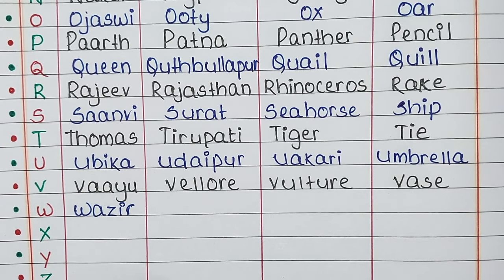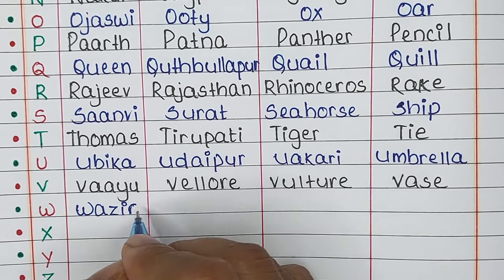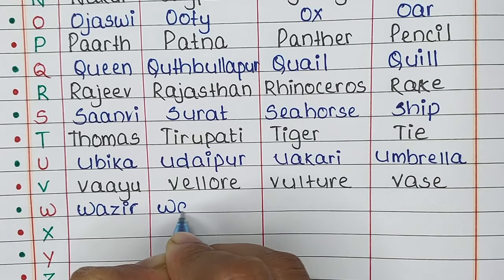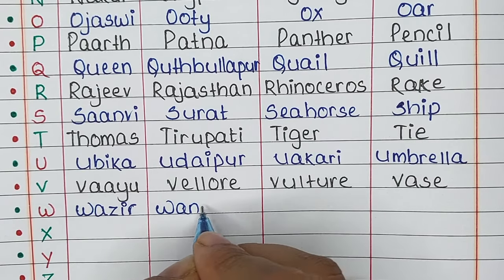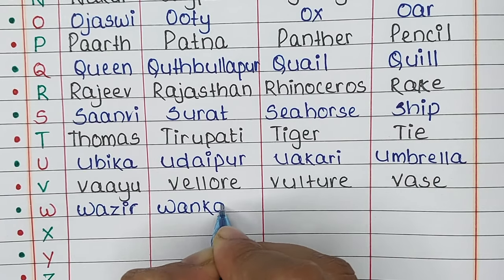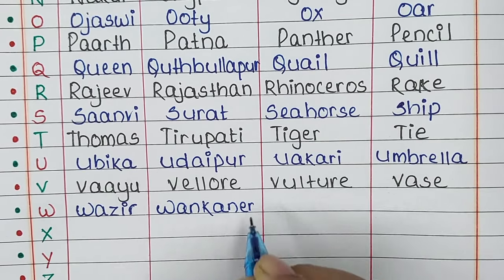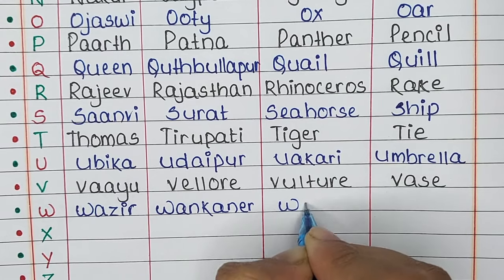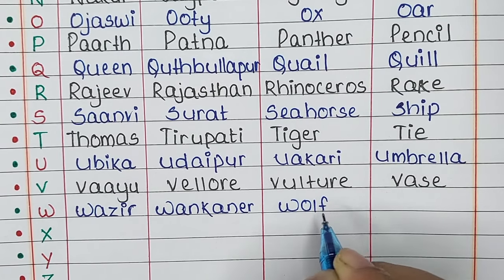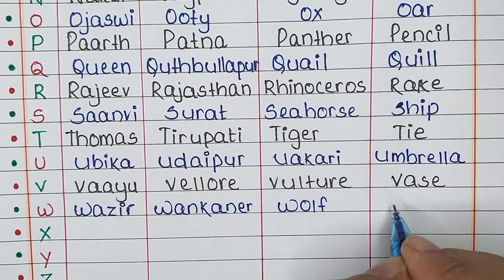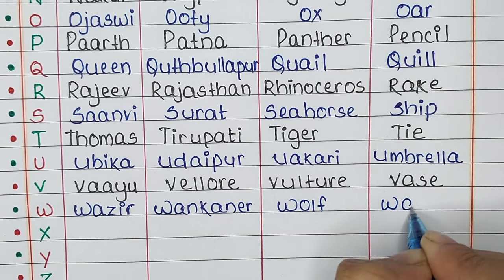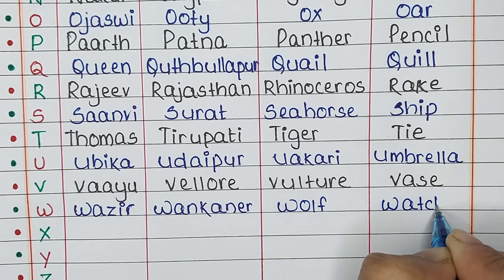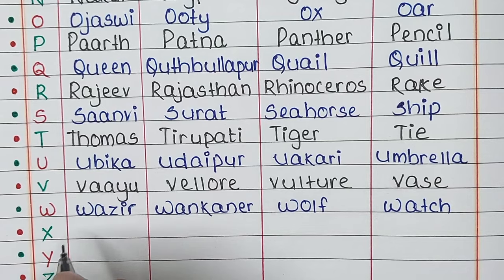Next is letter W. The name is Wajir, the place is Wankaner, the animal is Wolf, and the thing is Watch.